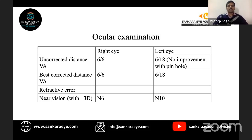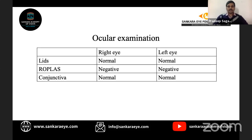Regarding visual acuity: in the right eye, uncorrected distance vision is 6/6 and best corrected vision is 6/6, with near vision N6 with plus 3 diopters. In the left eye, uncorrected visual acuity is 6/18 with no improvement with pinhole, and near vision is N10 with plus 3 diopters. Conventionally you describe each eye completely before moving to the next, but for convenience both are presented simultaneously here.